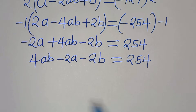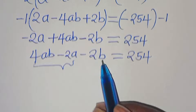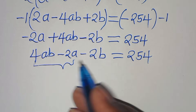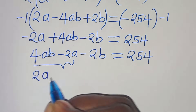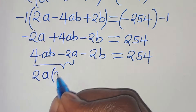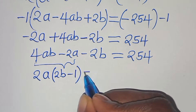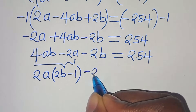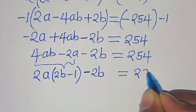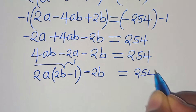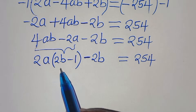Now we factor out 2a into the parentheses, giving us 2a times (2b minus 1), then minus 2b, and this equals 254.